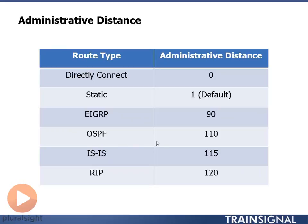OSPF is next on the list with an administrative distance of 110. ISIS is next with 115, and down here on the bottom is RIP with 120. I already told you RIP is slow and clunky and cumbersome, so we put that towards the bottom of the list, meaning those routes are added last.